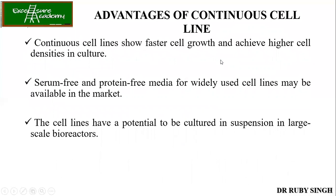The advantages of using continuous cell lines: they keep on dividing — just provide the media and they keep growing. Serum-free and protein-free media can be used and are available in the market. This is important because continuous cell lines need fewer nutrient requirements compared to other cell lines, which require serum to grow. These cell lines can be grown in suspension in large-scale bioreactors — just like culturing bacteria in tanks — and finally the cells are harvested and their membranes ruptured to extract proteins.